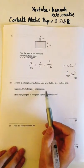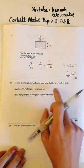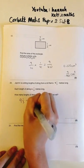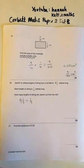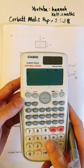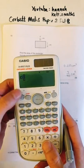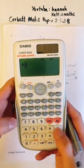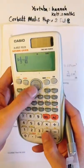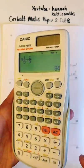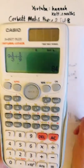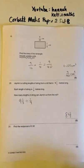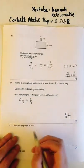Question 20: Jamin is cutting lengths of string from a roll 9 and a third metres long. Each length is a ninth of a metre. How many lengths can he cut? Use shift-fraction for mixed numbers in your calculator. 9 and 1/3 divided by 1/9 equals 84.